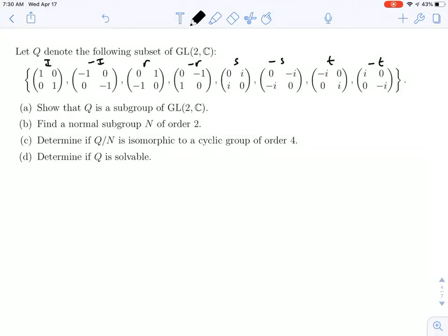Welcome back. In this video, we're going to take this subgroup Q that we found in a previous video of GL(2,C), and first we'll find a normal subgroup that has order 2, and then we'll determine if Q modulo that normal subgroup is isomorphic to a cyclic group of order 4. So first, the normal subgroup of order 2.